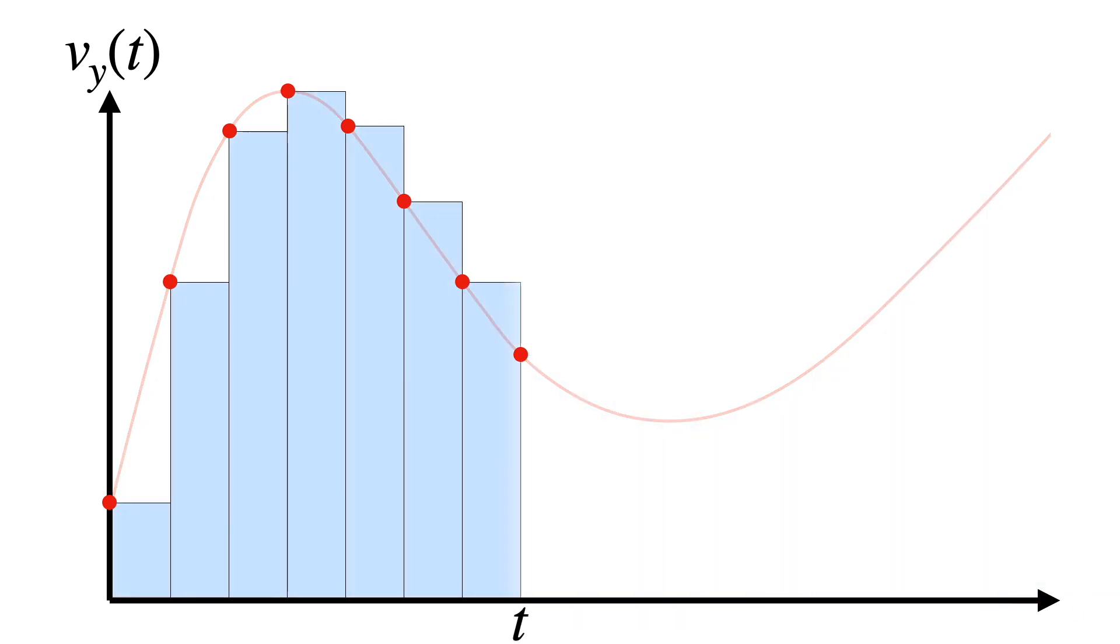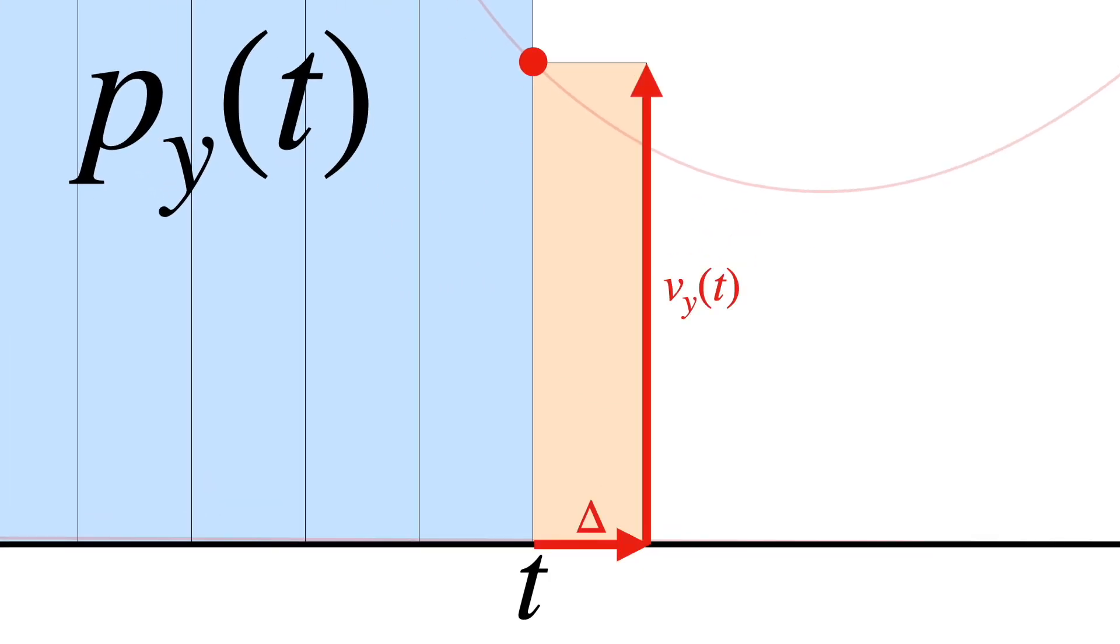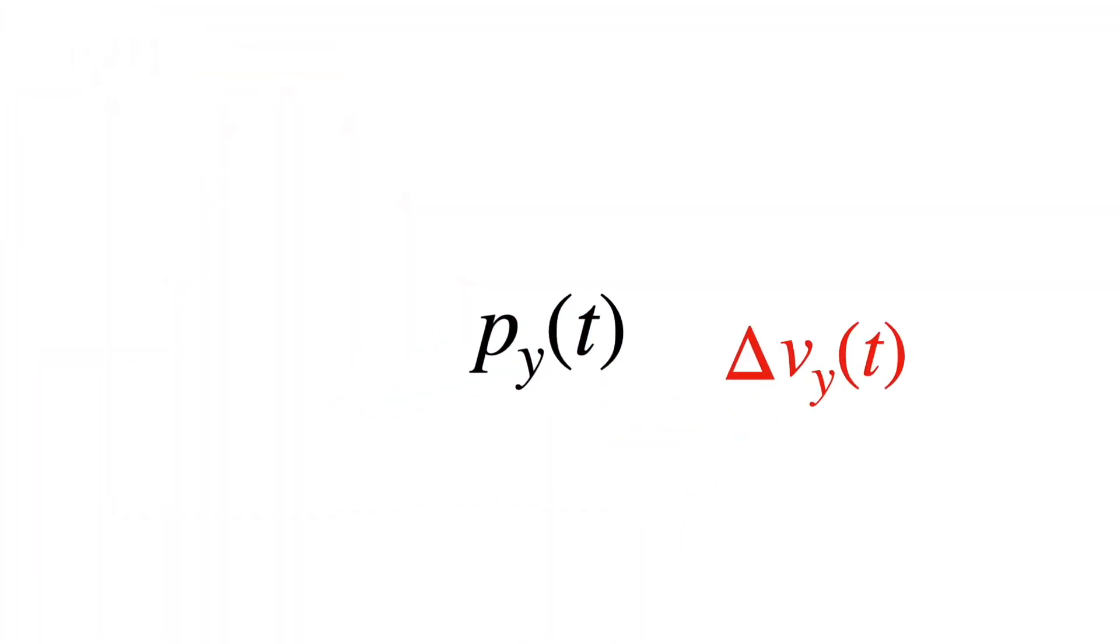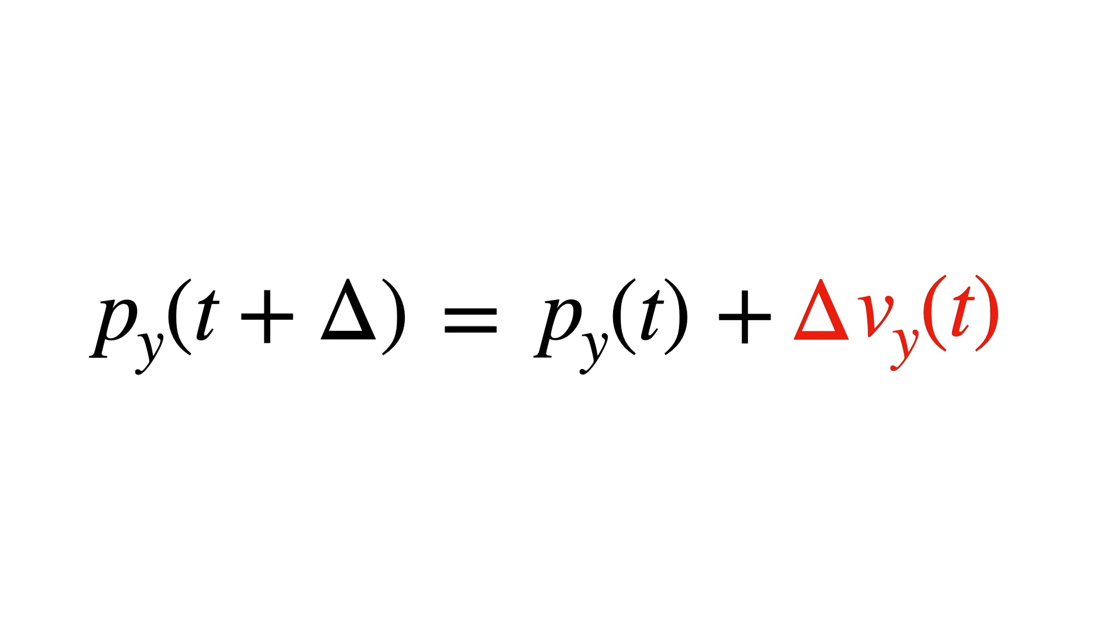Well, suppose we've already approximated p(t) and we want to compute the next time step, the area inside this orange box. Suppose the width of the box is delta and the height is v(t). So the area is delta times v(t).